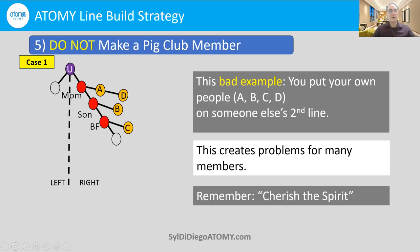And worst of all, you've forgotten about the motto principle of cherish the spirit. In Atomy, we do not want to take advantage of anybody. So we have to think about the person's best interest when we place them. For person A, we have to think: what is the best place for that person to go? Likewise for B, C, and D — where's the best place for them to go for their success? We want to do what's right for them.